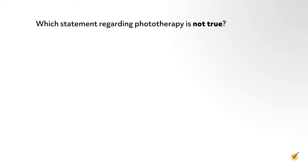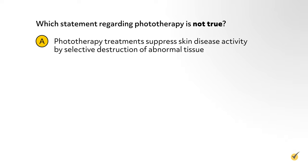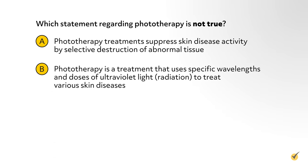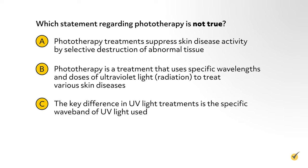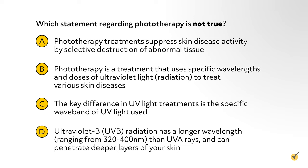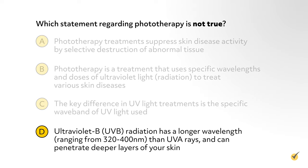Question 2: Which statement regarding phototherapy is not true? A. Phototherapy treatments suppress skin disease activity by selective destruction of abnormal tissue. B. Phototherapy is a treatment that uses specific wavelengths and doses of ultraviolet light or radiation to treat various skin diseases. C. The key difference in UV light treatments is the specific waveband of UV light used. D. UV-B radiation has a longer wavelength ranging from 320 to 400 nanometers than UV-A rays and can penetrate deeper layers of the skin. If you chose D, you are correct — UV-B radiation utilizes shorter wavelengths ranging from 290 to 320 nanometers that reach only the outer layer of the skin.